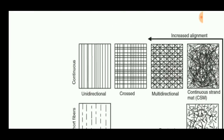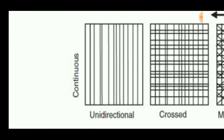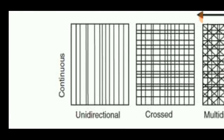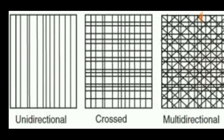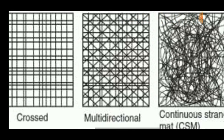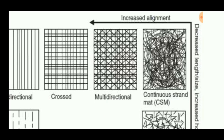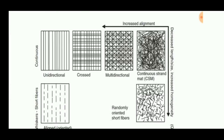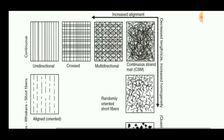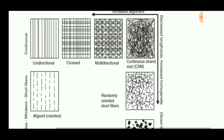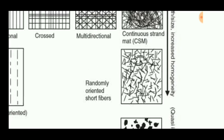These are all the fiber orientations: unidirectional mats provide strength only in one direction — the x-direction — but cannot withstand tougher forces in the y and z directions. Cross orientation can withstand forces in the x and y directions. Multidirectional orientation can withstand forces in all directions. This graph shows increased alignment strength versus decreased length or size for randomly oriented fibers.